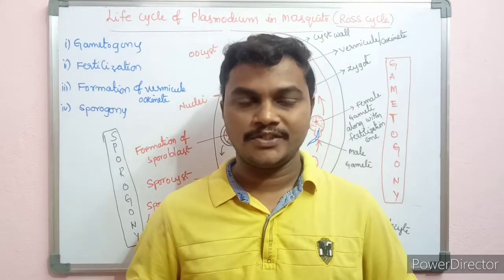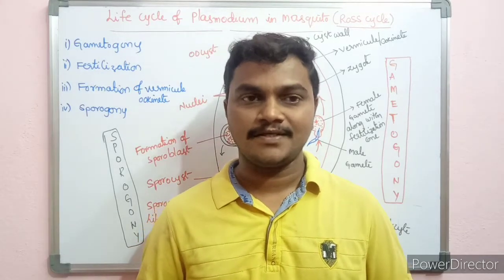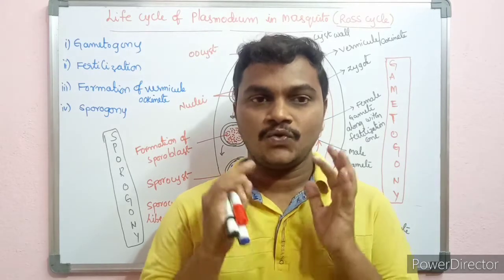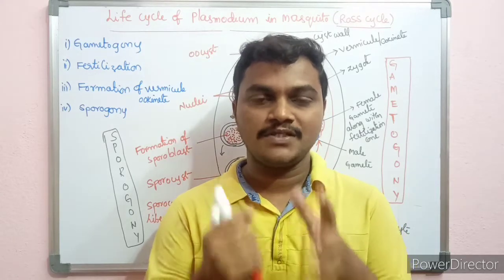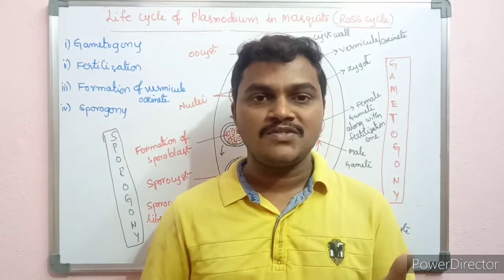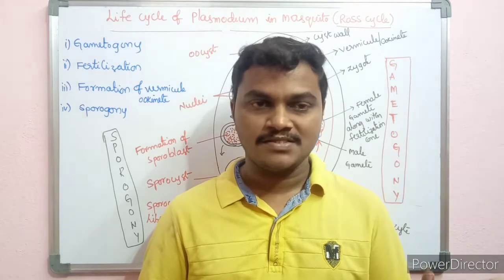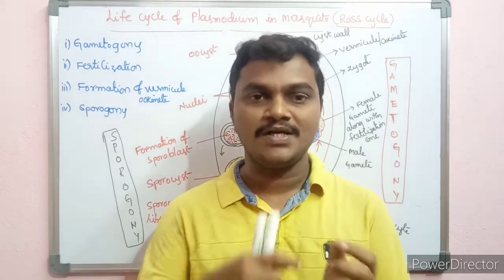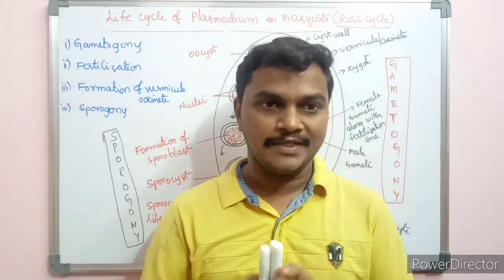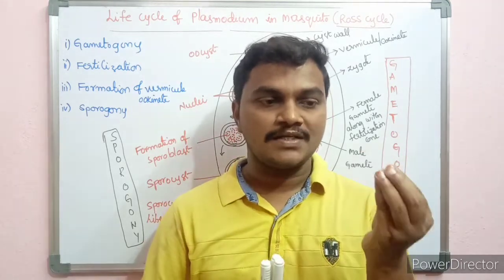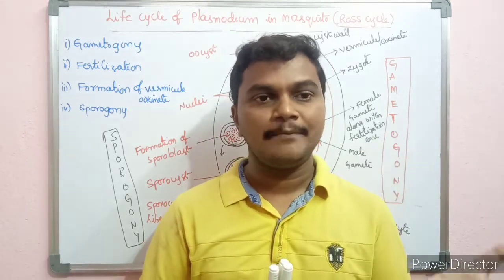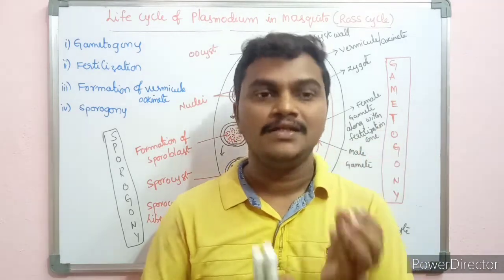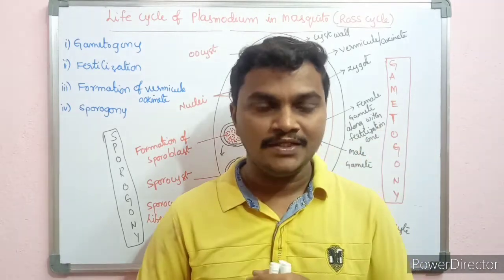Welcome back to our channel. Today we are going to discuss the life cycle of Plasmodium in mosquito, also called the sporogonic cycle. In the sporogonic cycle, gametocytes are formed in infected human beings. Those gametocytes are transferred to the mosquito through its bite. During inoculation, gametocytes along with some erythrocytic stages enter into the mosquito.